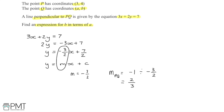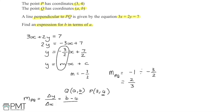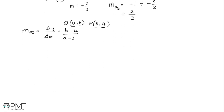Now that I've got a numerical value for the gradient of PQ, I can work out the gradient in terms of A and B and make them equal to each other. The gradient of PQ is the change in y over the change in x. Taking Q with coordinates A, B and P with coordinates 3, 4, the change in y is B minus 4 and the change in x is A minus 3. So the gradient of PQ in terms of A and B is B minus 4 over A minus 3.